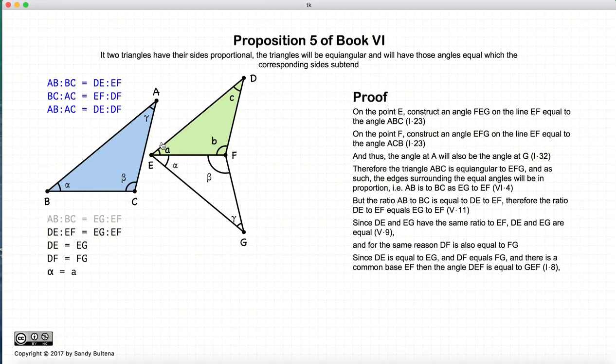Now, since DE is equal to EG, and DF is equal to FG, and they have a common base, then according to Proposition 8 they must be equal triangles, which means that this angle here, alpha, will be equal to A. Again, that's Proposition 8 of Book 1.